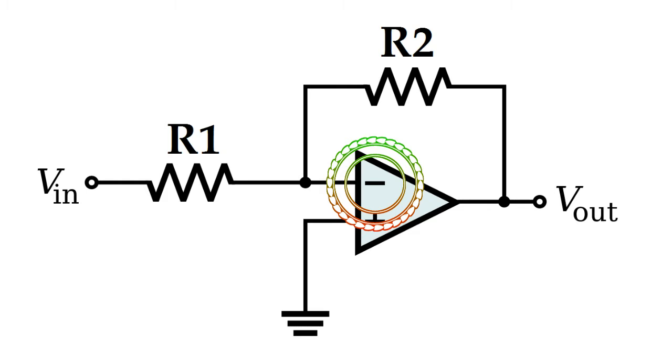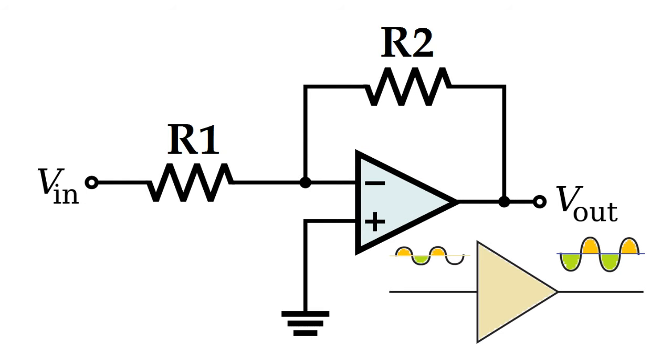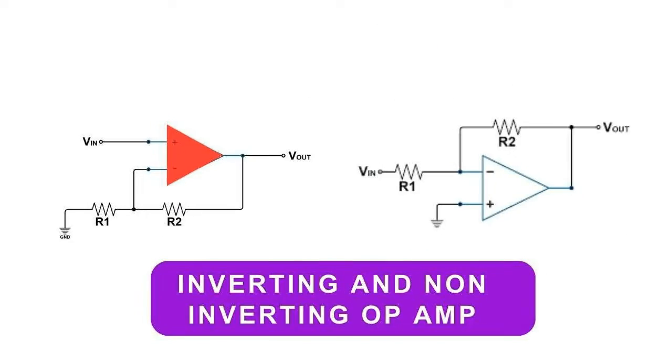Due to the negative sign, the output and input signals are out of phase. If both signals must be in phase, a non-inverting amplifier is used.